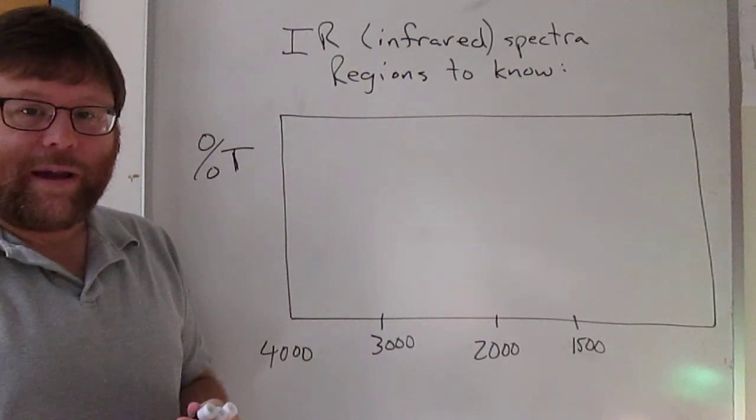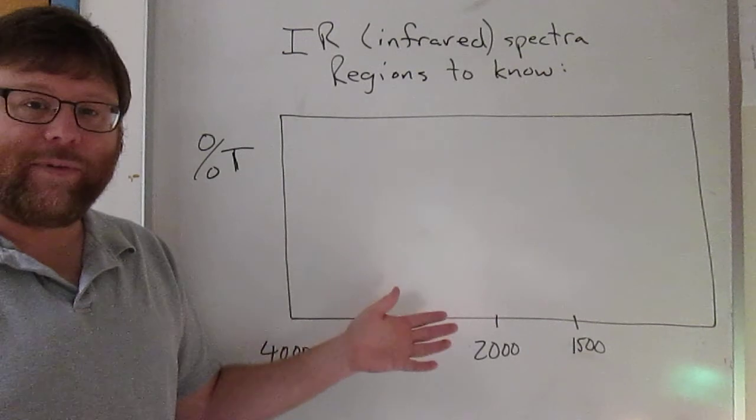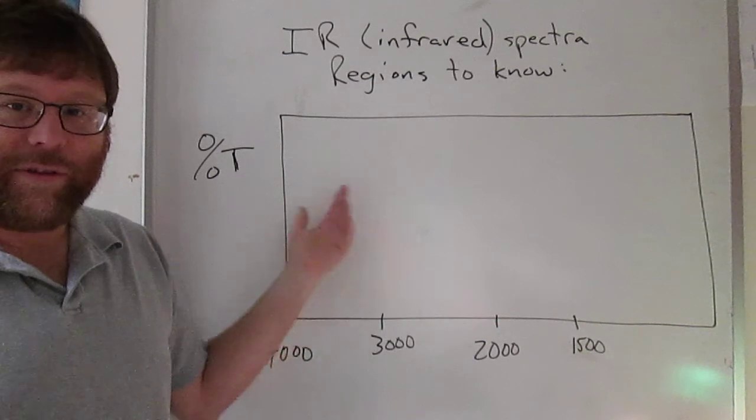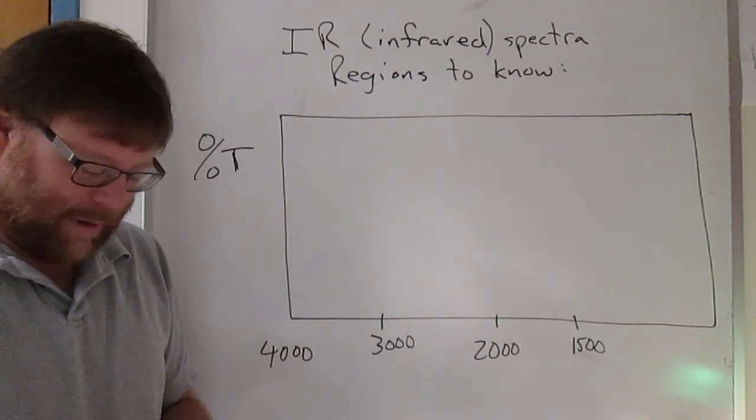Basically we're going to pass infrared light through a sample. The molecules in that sample will absorb some of the wavelengths depending on what functional groups are present, and you will see an absorbance in the spectrum. And from that you can determine what functional groups are in the molecule.